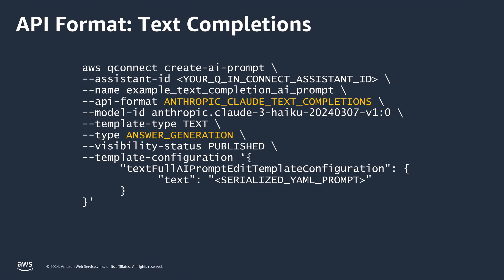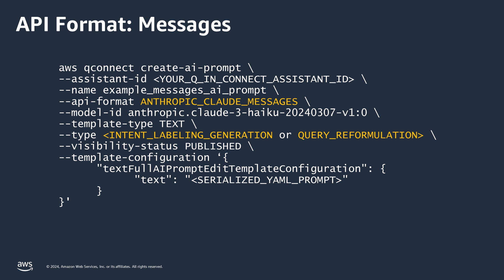You can create AI prompts in two formats. The first is text completions, which are used for gathering answer generations — where you're looking for a solution to be generated based on knowledge excerpts and additional information. The second is messages, which is used to generate intents displayed to agents, as well as for query reformulation, which constructs relevant queries used in the answer generation process.